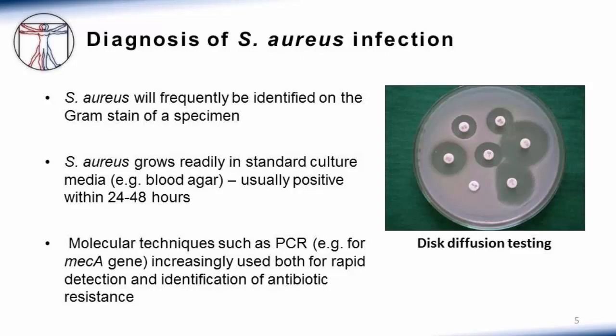Around each antibiotic disc there's a zone of inhibition where staph aureus is not growing. Depending on how large that zone of inhibition is, you can establish whether this isolate is susceptible, resistant, or of intermediate susceptibility. You'll notice there's no zone of inhibition around the lower left one — E for erythromycin. The more observant may notice a D-shaped zone of inhibition around clindamycin — you can look up what the D-test for clindamycin resistance is in staph aureus testing.